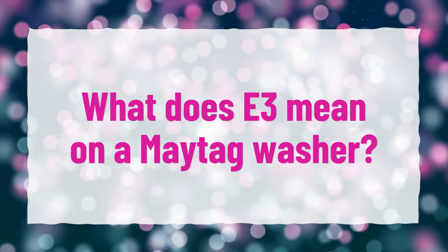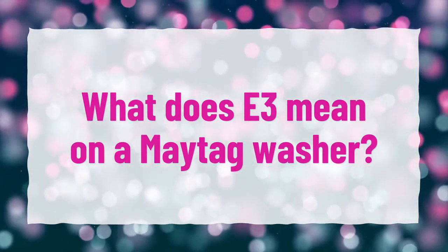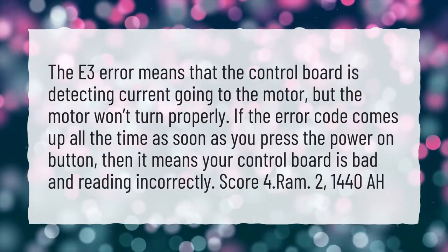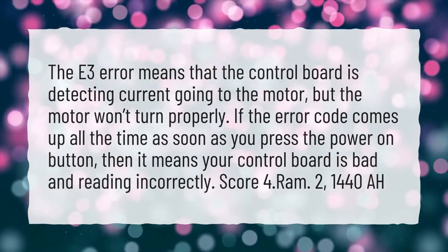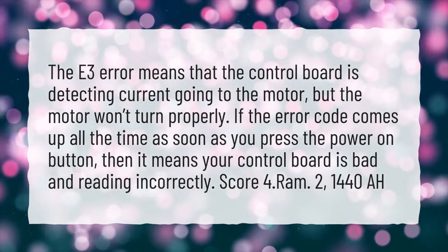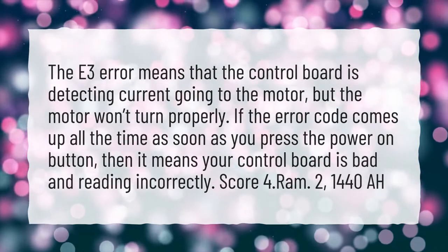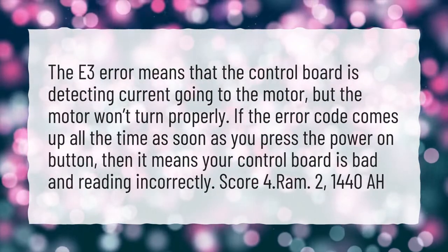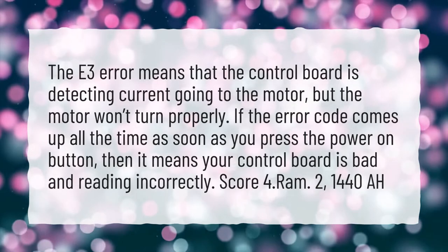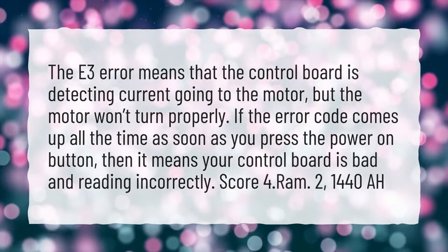What does E3 mean on a Maytag washer? The E3 error means that the control board is detecting current going to the motor, but the motor won't turn properly. If the error code comes up all the time as soon as you press the power on button, then it means your control board is bad and reading incorrectly.